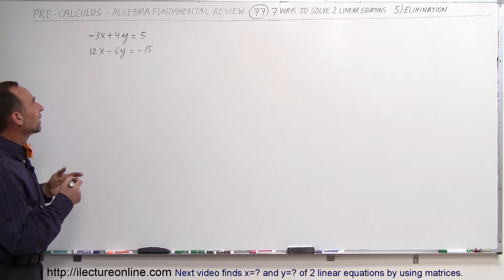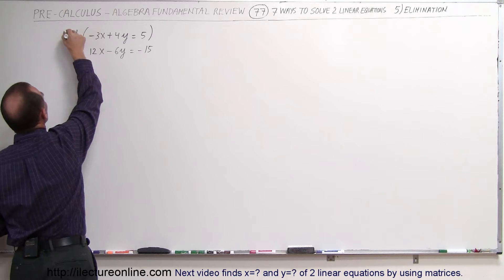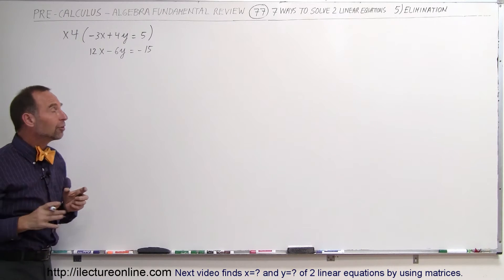But I always like to do the least amount of work, so I think if I multiply the top equation by 4, I only have to multiply one of the equations. So I'm going to multiply the top equation by 4.